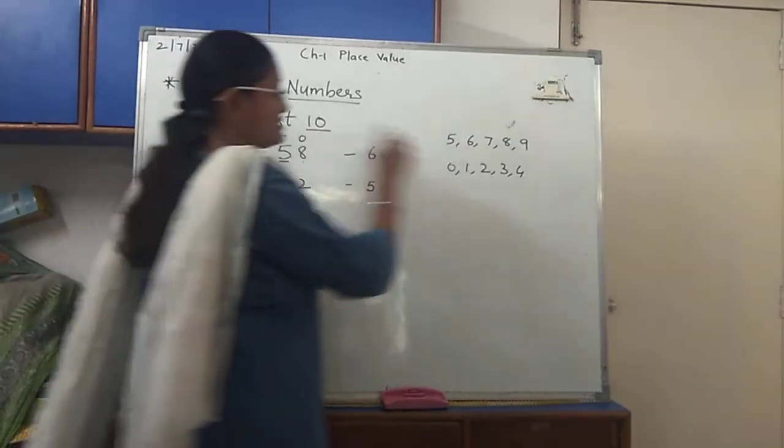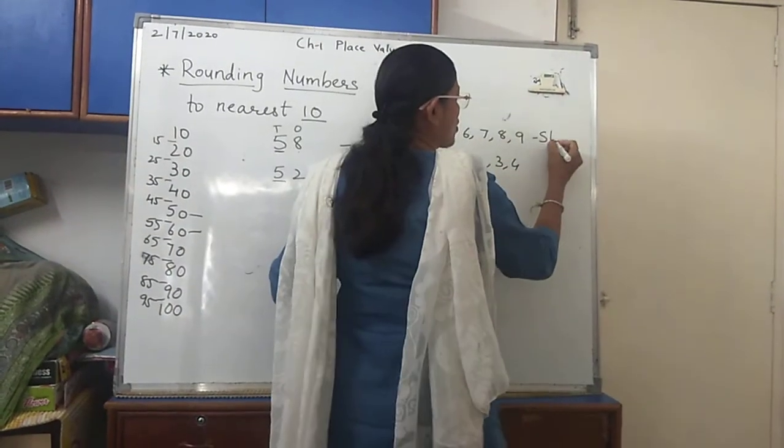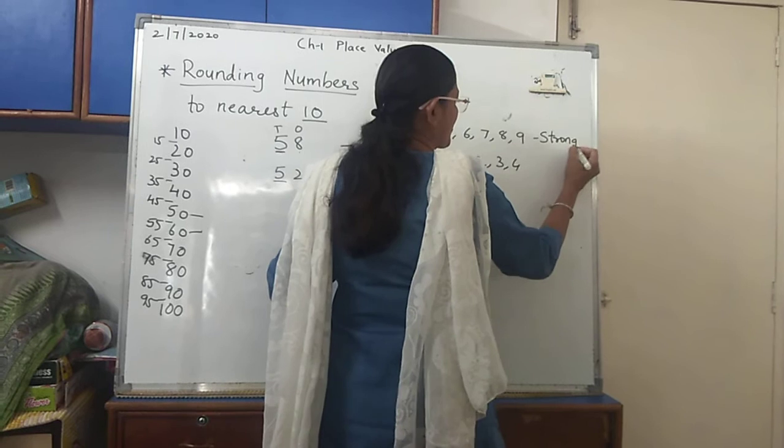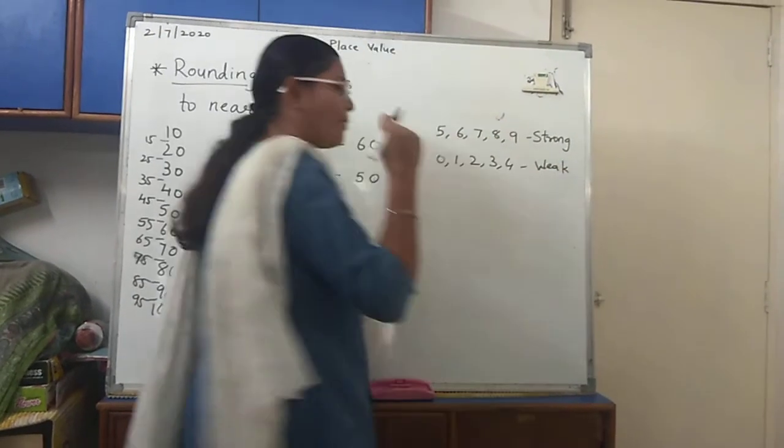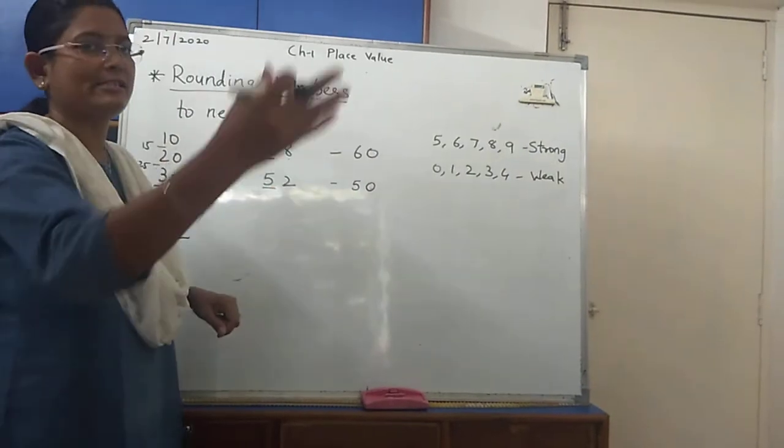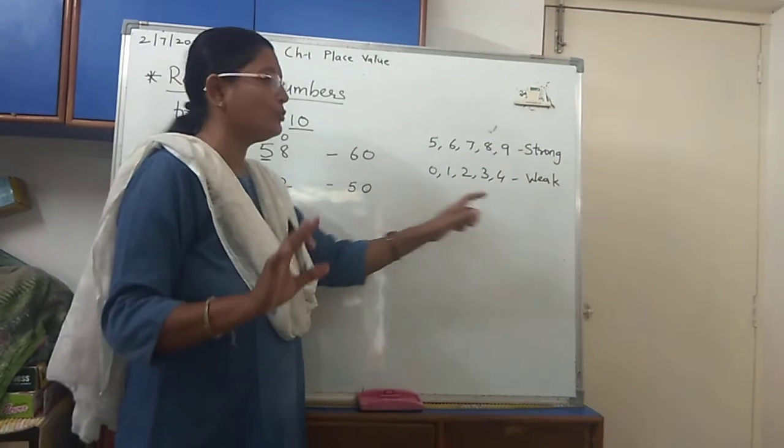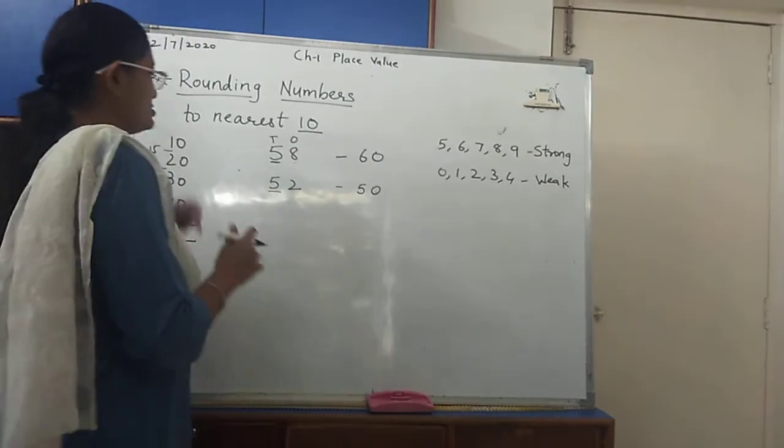One more thing is that, say that these are strong numbers - 5, 6, 7, 8, 9. And these are weak numbers - 0, 1, 2, 3, 4. These have power to push them to the next digit. But this does not have any power to push the other number.